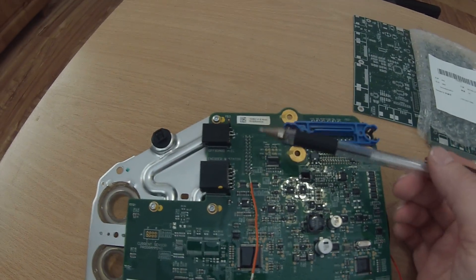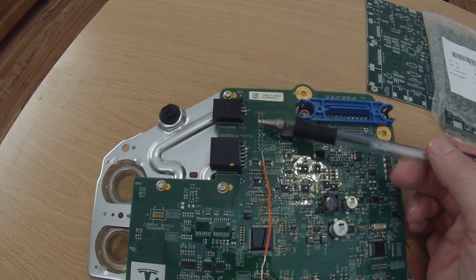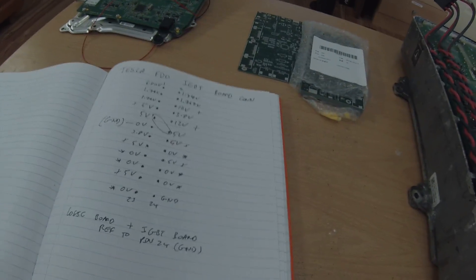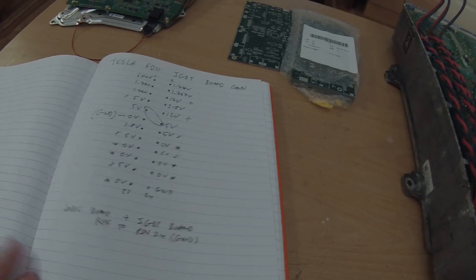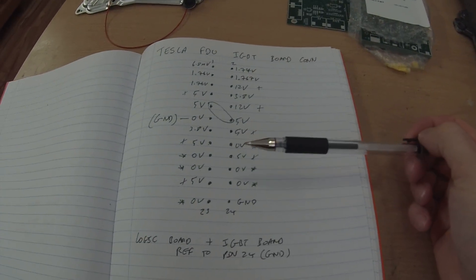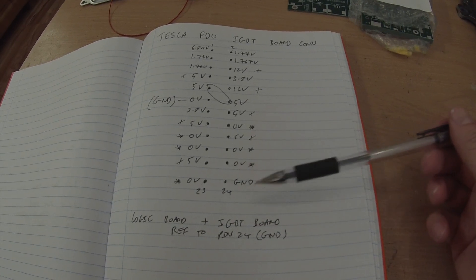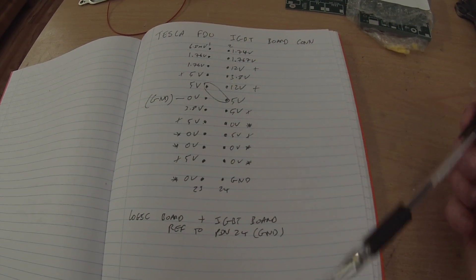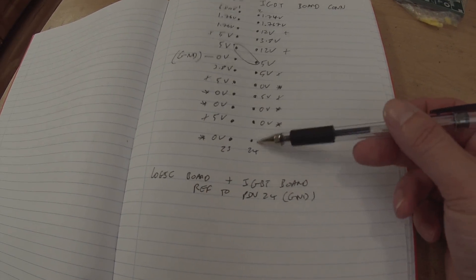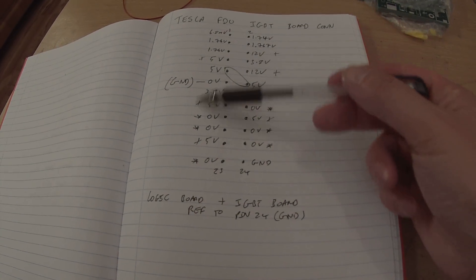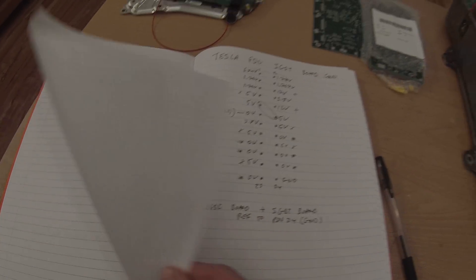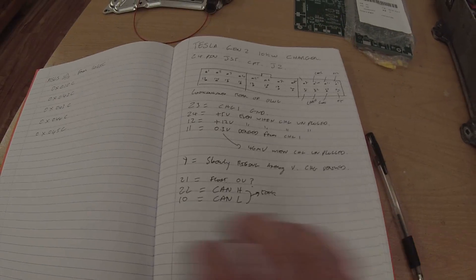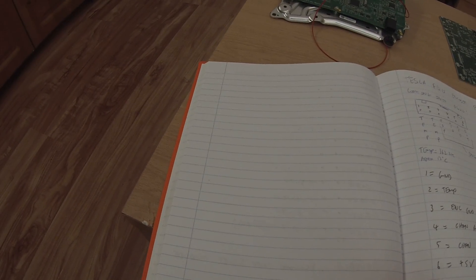What we've been doing is looking at what these signals do in various conditions. For example, I've got my notes here. Let me click back a few pages. Here is measurements taken with the logic board and IGBT driver connected together and referenced at the pin 24 ground. It's been measuring various voltages. Going back further, all kinds of notes in here. Now it's a bit of a mess, you know.